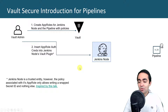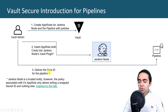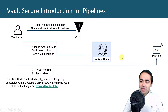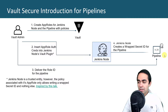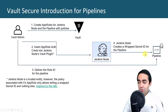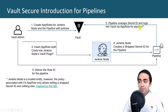That secret ID is the password for the AppRole used by the pipeline. The Vault admin also delivers a role ID for the pipeline, which will be visible in the Jenkinsfile. The AppRole is already generated in step one — you get a role ID and a secret ID — but the Vault admin only puts the role ID in the pipeline. No secret ID is delivered to the pipeline directly. From that point, the Jenkins node creates a wrapped secret ID for the pipeline — wrapped, not the actual secret ID — and then the pipeline unwraps it.